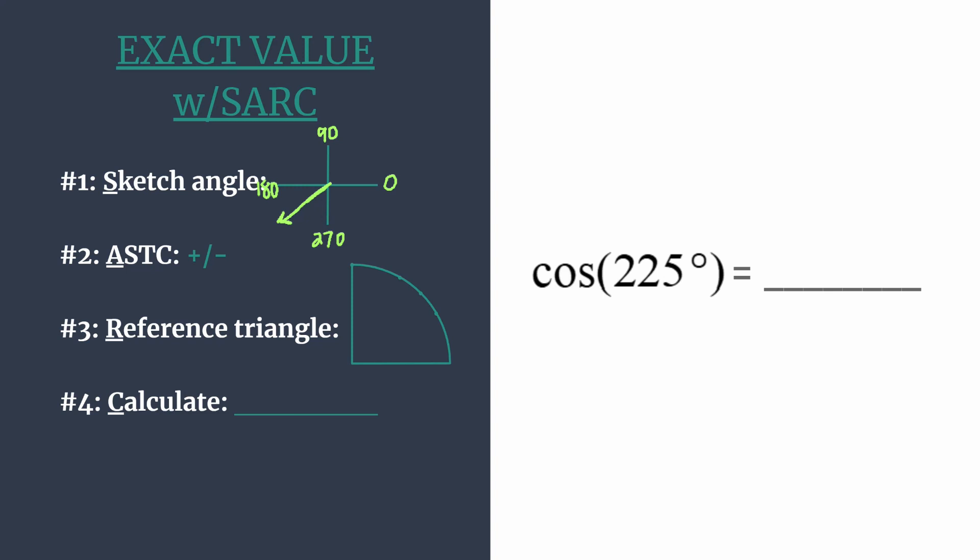Now we're ready to decide if our final answer should be positive or negative. Just use ASTC—think all students take classes. That tells you which trig functions are positive in each quadrant, starting with quadrant one. They're all positive in quadrant one.